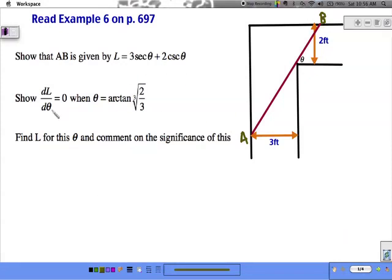Then we want to show that the derivative is 0 when theta is the arctangent of the cube root of 2 thirds. And then we want to find L for this value and we want to see what that really means.